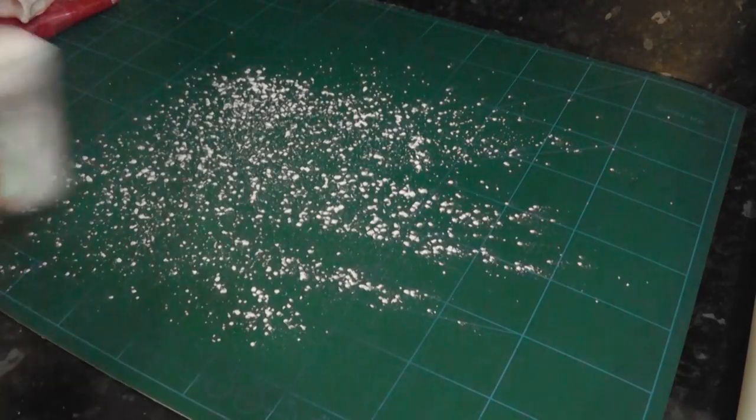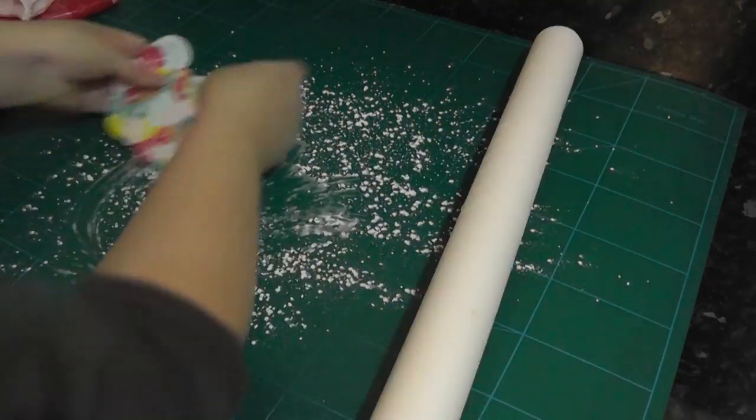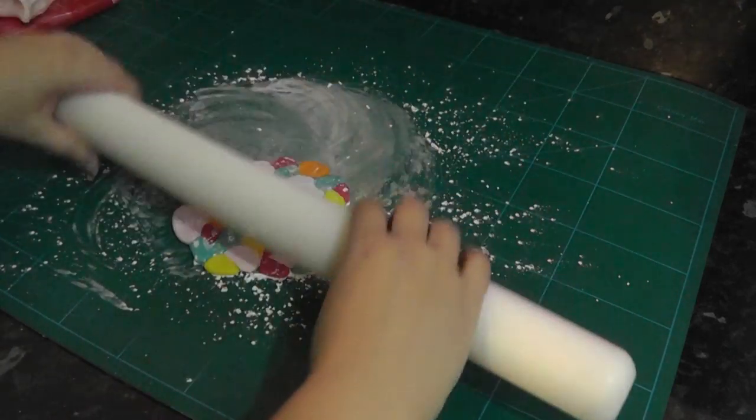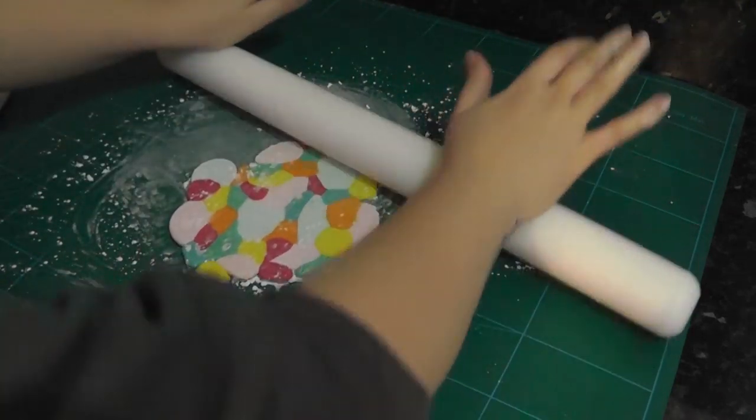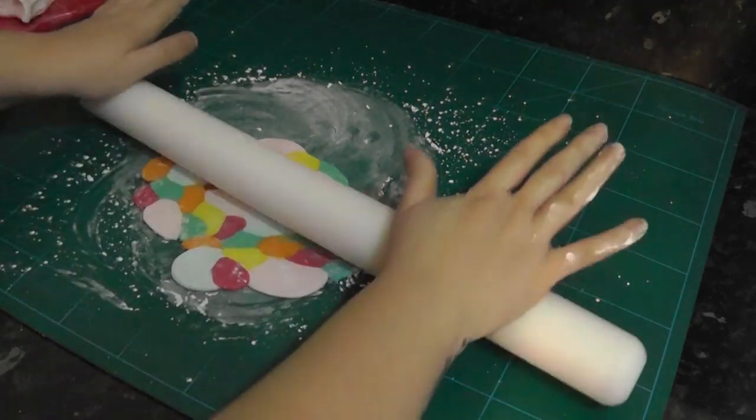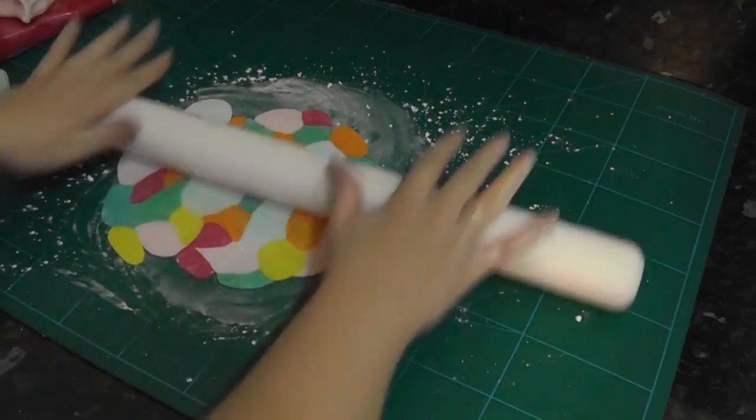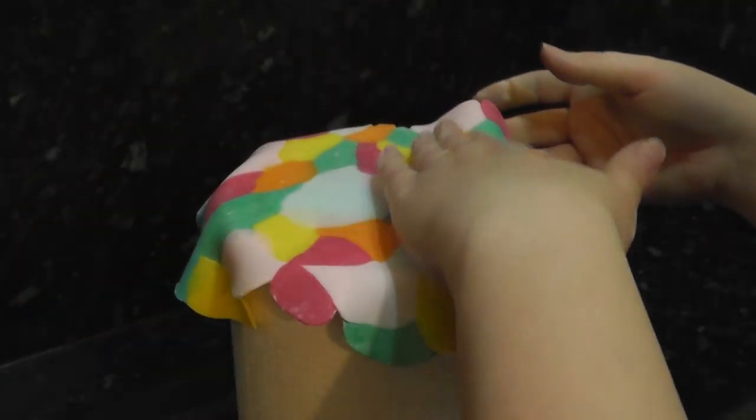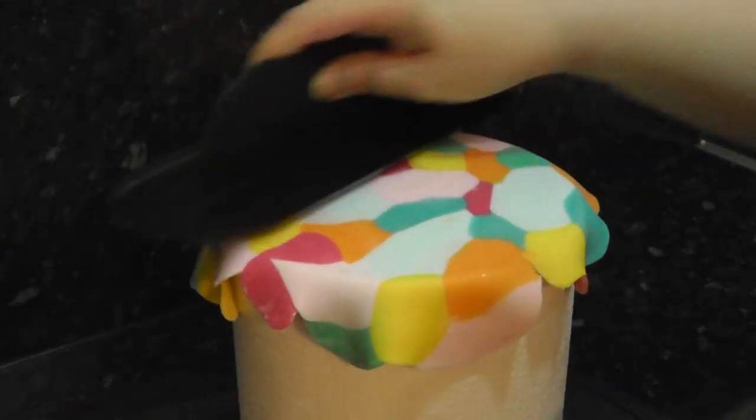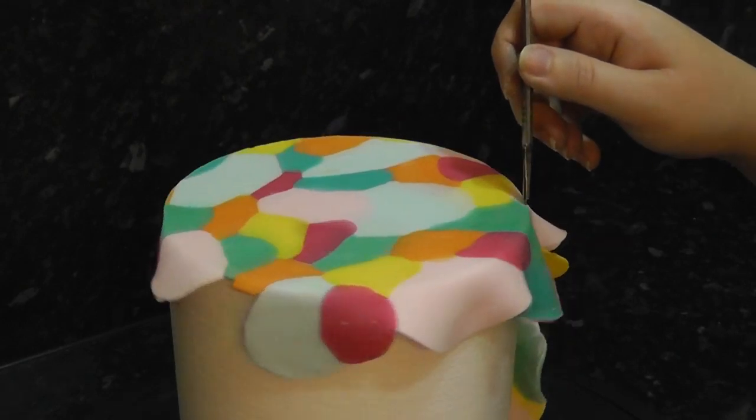Now make sure to dust your surface, you won't want this to stick. Begin gently rolling it out, making sure to keep moving it. Once it's big enough, lay it over the top of your cake and smooth it out. Trim off the overhang and put your offcuts to one side, you might need them.